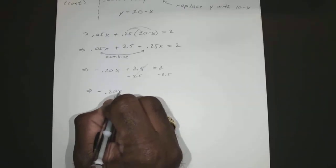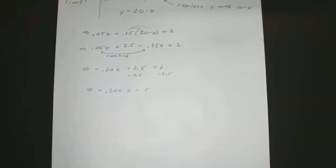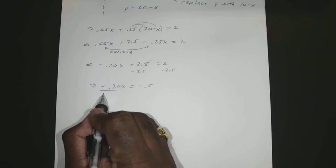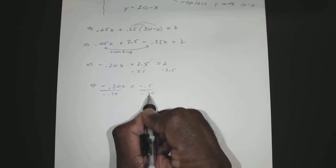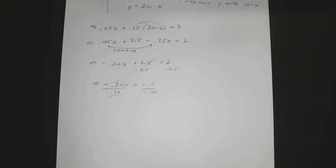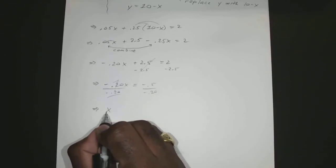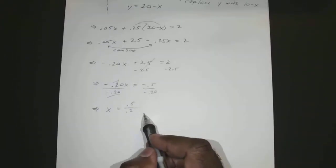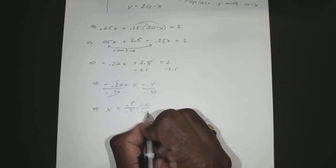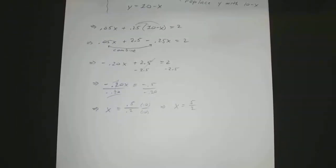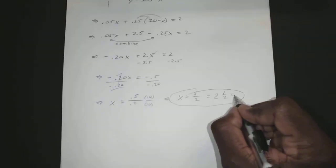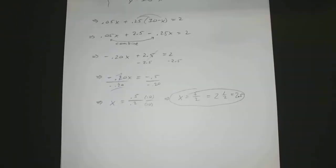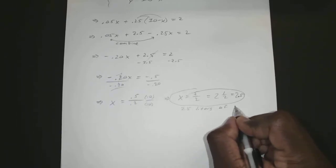So you have negative 0.20X equals negative 0.5. Divide both sides by negative 0.20. Negative divided by negative is positive, so you have 0.5 divided by 0.2. If you multiply both of those by 10, you get X equals 5 over 2, or 2.5. So you need 2.5 liters of the 5% solution.